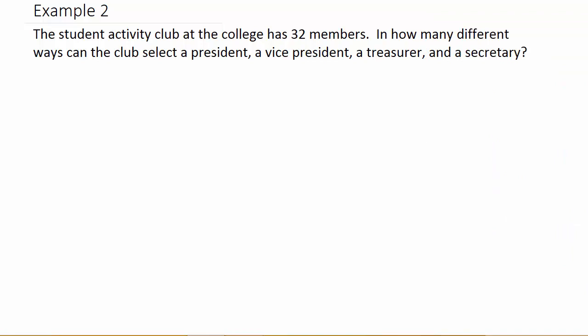Let's look at example two. The student activity club at the college has 32 members. In how many different ways can the club select a president, a vice president, a treasurer, and a secretary? Sometimes it's a little more difficult to determine if it's a combination or permutation.